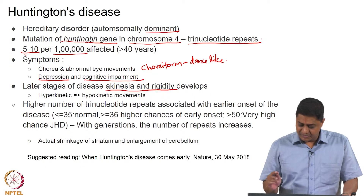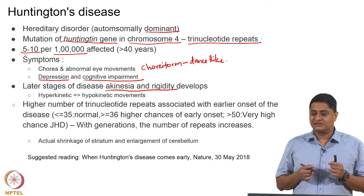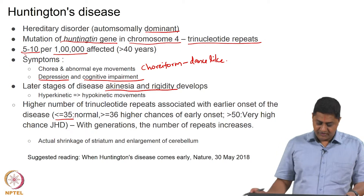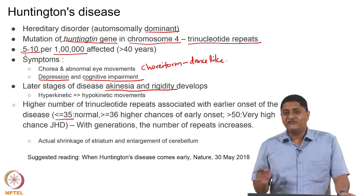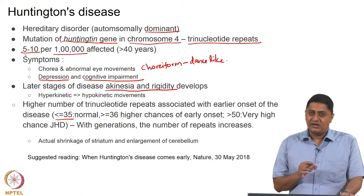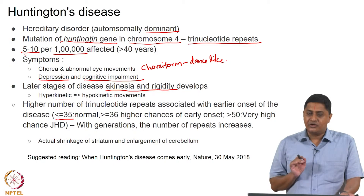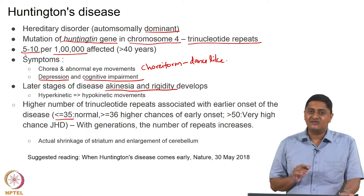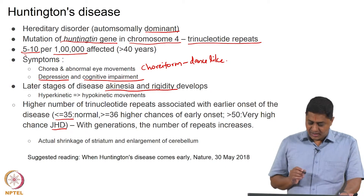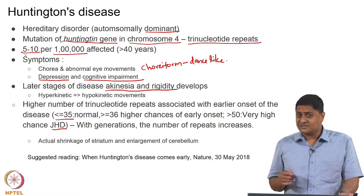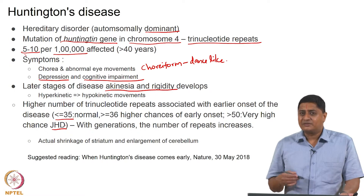The number of trinucleotide repeats determines when the person is going to get the disease. If this number is below 35, it is relatively normal. If it is greater than or equal to 36, there is a higher chance of early onset. Above 50 repeats usually signals that the person will develop what is called Juvenile Huntington's Disease, or JHD. In some cases, these children develop the disease at around age 12 or 13.